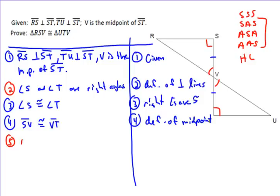So I can make the claim that angle SVR is congruent to angle TVU, and that's just because vertical angles are congruent.